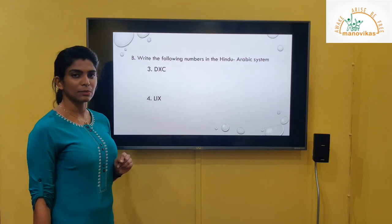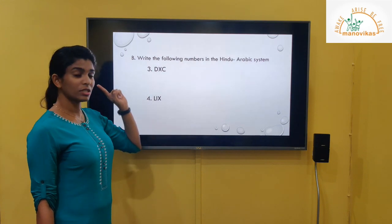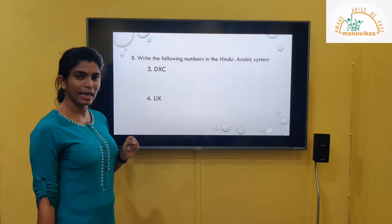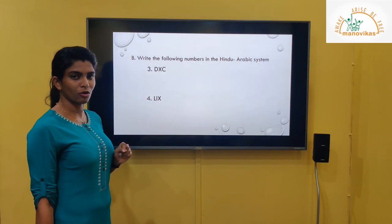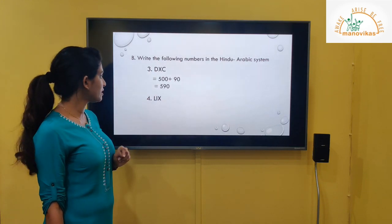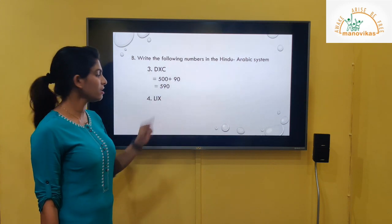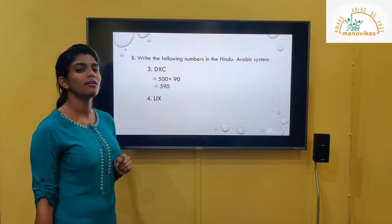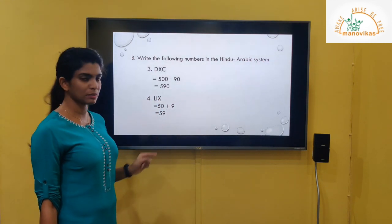Next: DXC. The value of D is 500. XC equals 90. So 500 plus 90 gives 590. Next: LIX. The value of L is 50, and IX is 9. So 50 plus 9 gives 59.